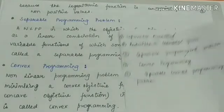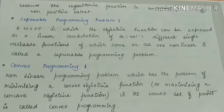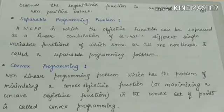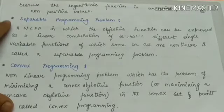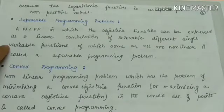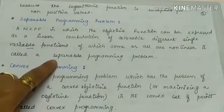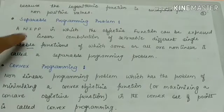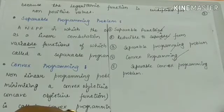Now the definition of separable programming problem: a given NLP problem in which the objective function can be written as a linear combination of different single-variable functions is called a separable programming problem. The given objective function is expressed as a sum of single-variable functions, some or all of which are nonlinear.